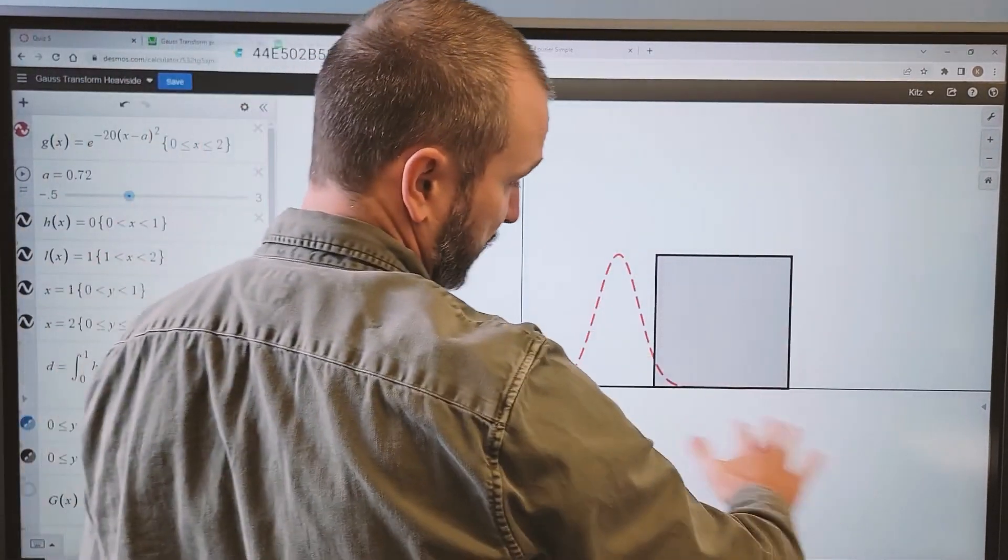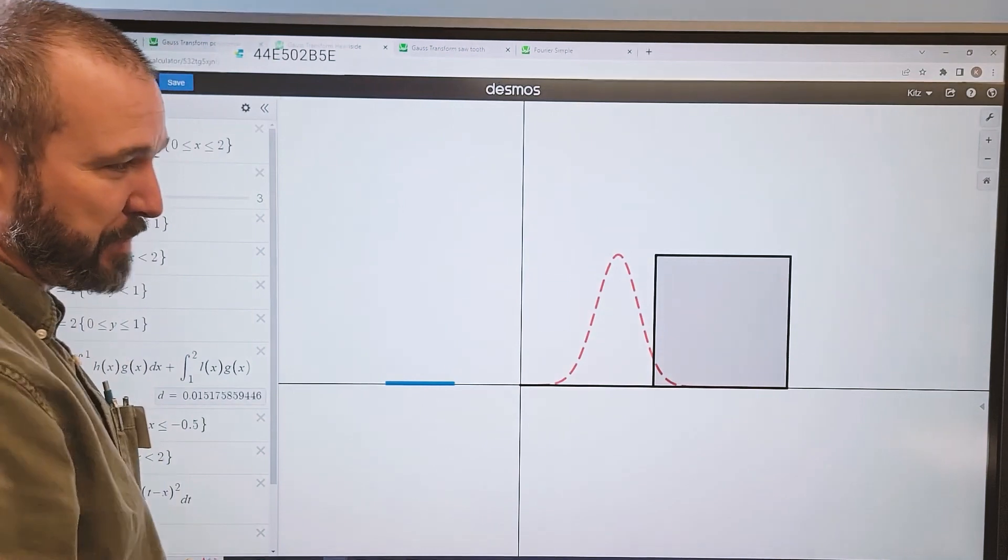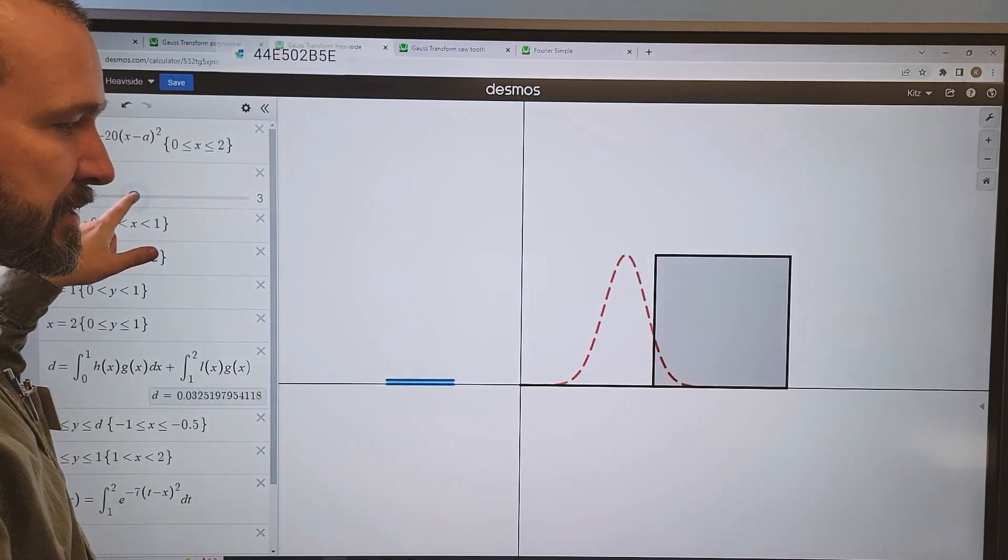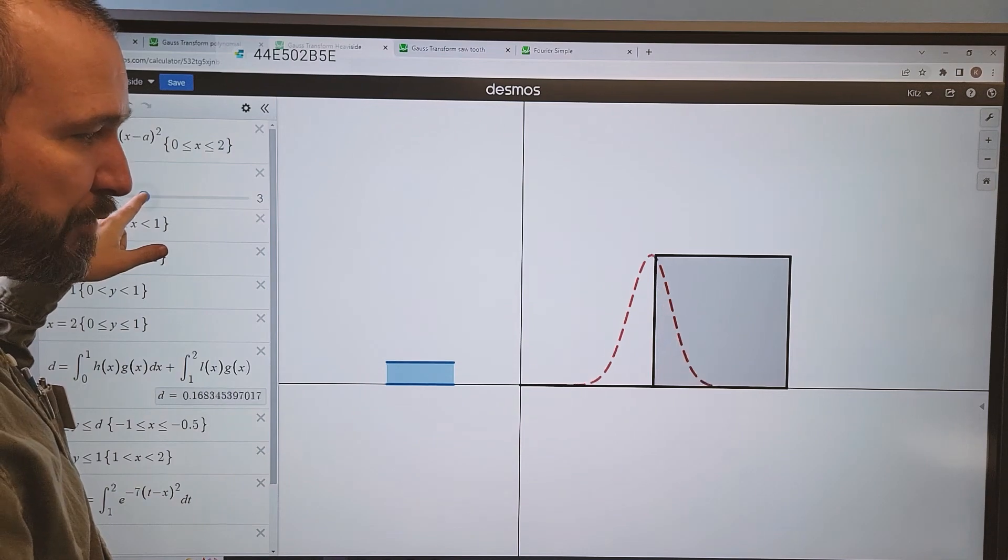And you can see it is very sharp, right? There's nothing about this metal plate that's smooth at all. And as I start to pass this density function over the metal plate,